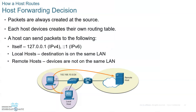Routing is another important responsibility of the network layer — finding the best path to the destination, meaning the quickest route. There are three different ways you can communicate: to yourself using a loopback address (127.0.0.1 for IPv4 or ::1 for IPv6), which checks the local host for the ability to encapsulate and decapsulate packets; with local hosts inside your LAN; or remotely by going through your router to the outside.